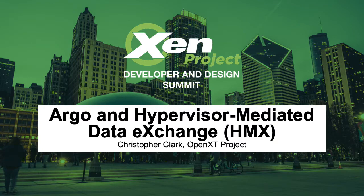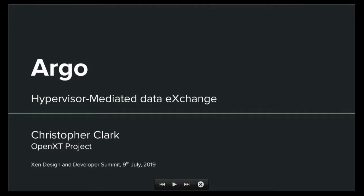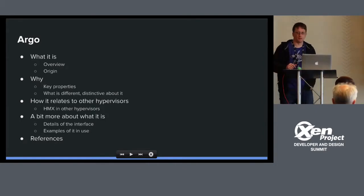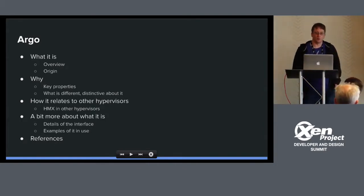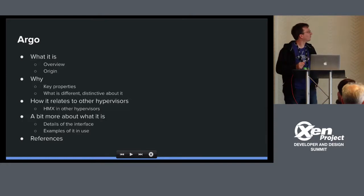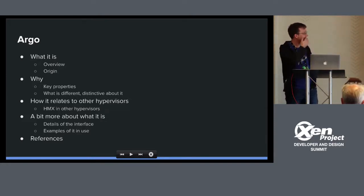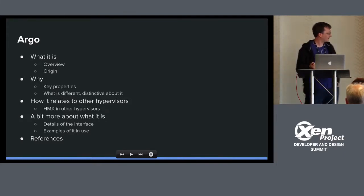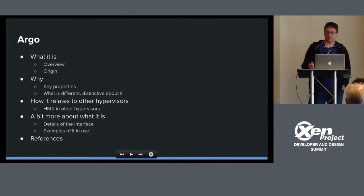I'm here today to talk to you about a thing called Argo, which is a new introduction into the latest version of Xen 4.12. I'm going to give you a walkthrough of what Argo is, where it came from, what the key properties of it are, its relationship to the hypervisors, and then some details and references.